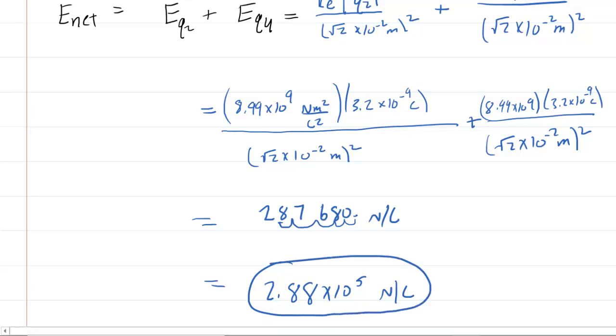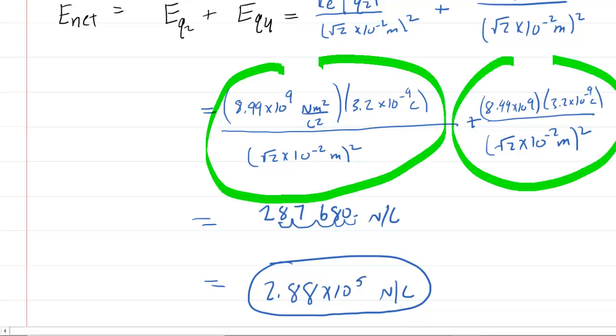By the way, a little calculator trick. You might have noticed that these two were exactly the same. So you actually could have just taken the first one, put it in your calculator, and then multiply it by 2. That would have been a little bit easier. But regardless, here is the final answer.